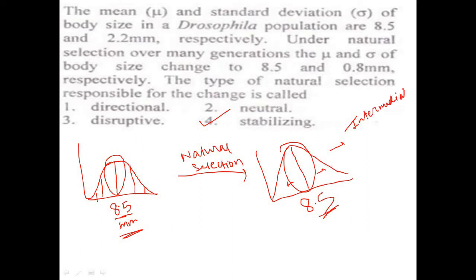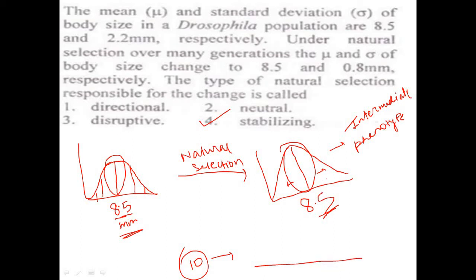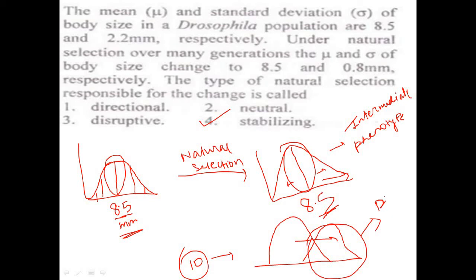What would happen if, after natural selection, the mean body size had changed to 10 millimeters instead? In that case, the graph would shift to the right, toward one extreme end. When only one extreme end is selected, that would be directional selection.